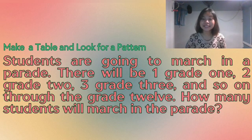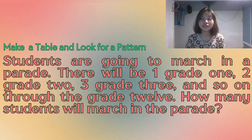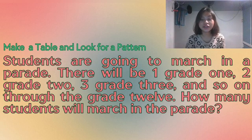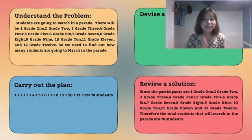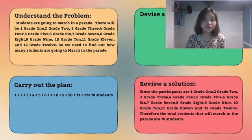For our first example, we will review the following problem. There are students attending a parade: one grade 1 student, two grade 2 students, three grade 3 students, and so on until grade 12. How many students are there in total? We begin with trying to understand the problem by stating the terms: one grade 1 student, two grade 2 students, and three grade 3 students. The unknown terms are the population of grades 4 to 12. The problem is searching for the total number of students attending the parade.